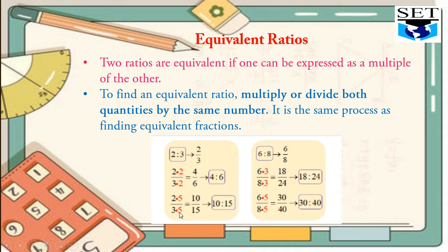Similarly, in order to find the second equivalent ratio, we have multiplied 2/3 by 5. 2 times 5 is 10 and 3 times 5 is 15. So the second equivalent ratio of 2 to 3 is 10 to 15.